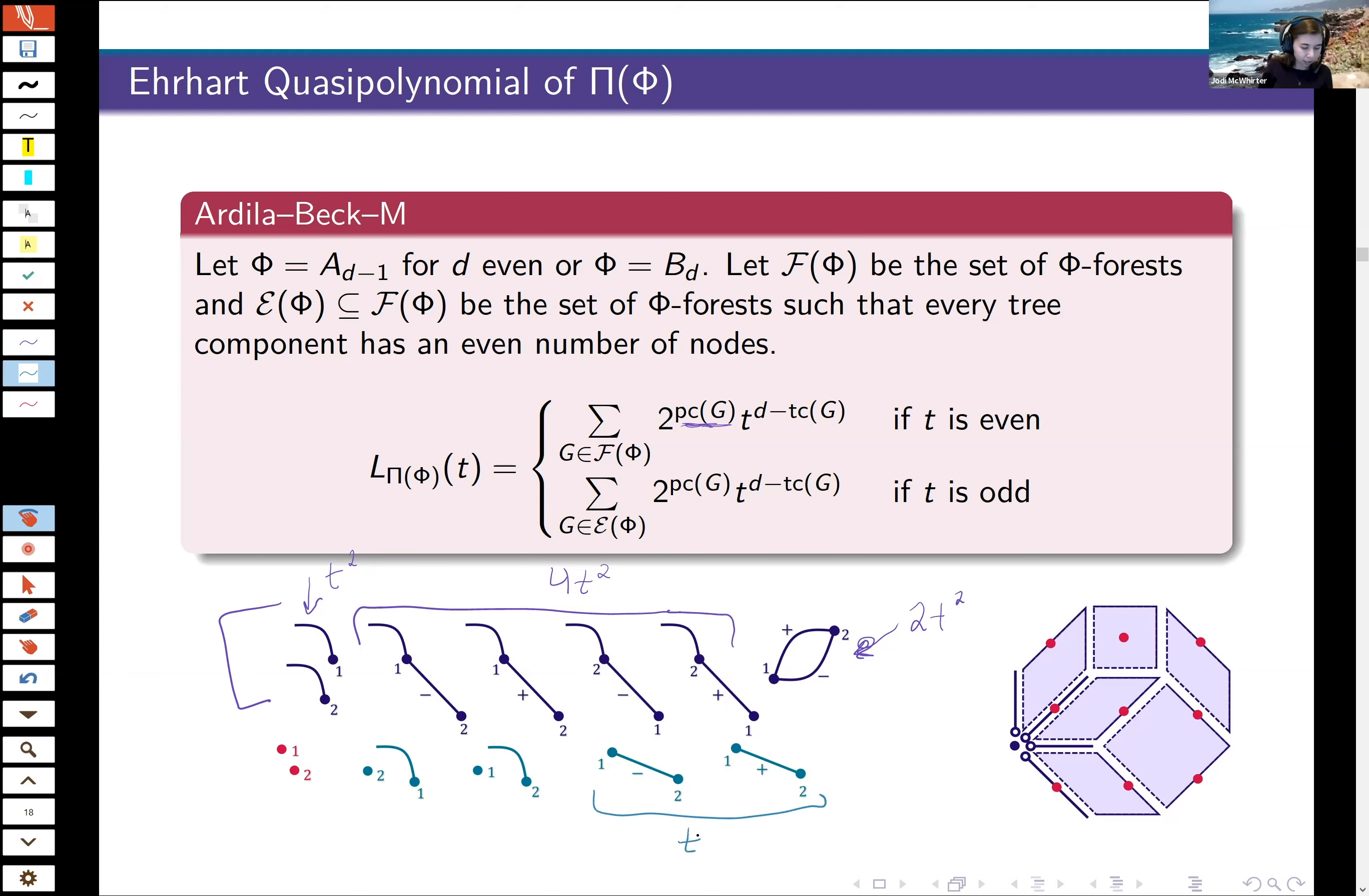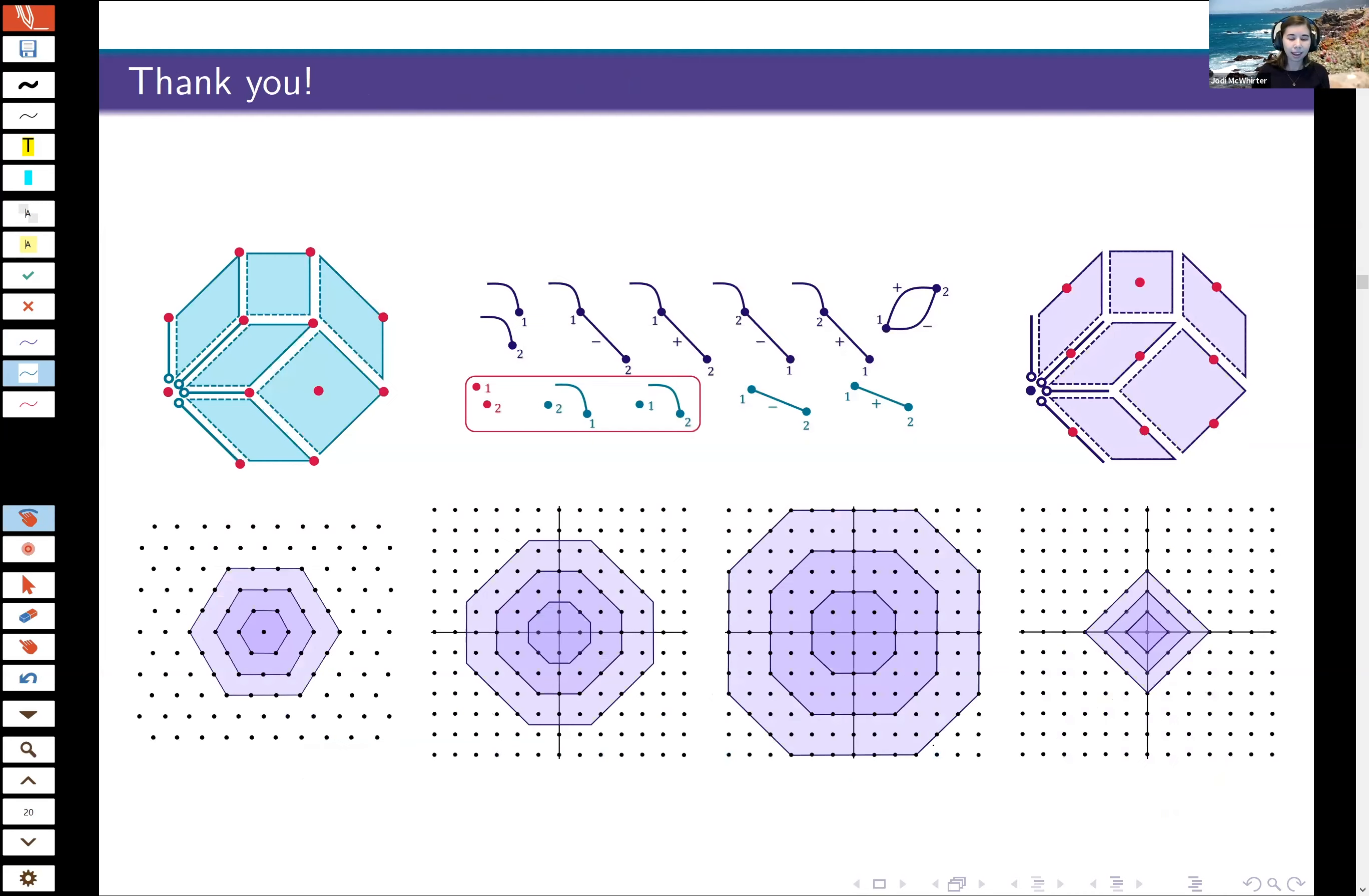These ones right here, again, will just contribute one copy of t. These ones also will contribute one copy of t. And this one contributes just the 1. And so overall, you might notice that this gives us a 7t² on the top. These ones overall give us 4t. And then this last one gives us 1. And so if you remember, that was the Ehrhart polynomial that we saw earlier. And then it turns out that the ones that we toss out are these ones right here. And so that also shows that this right here, again, was our 7t². And these two gave us the 2t, which is what we saw as the Ehrhart quasipolynomial, or the Ehrhart polynomial for the odd dilates. All right. And thank you very much.